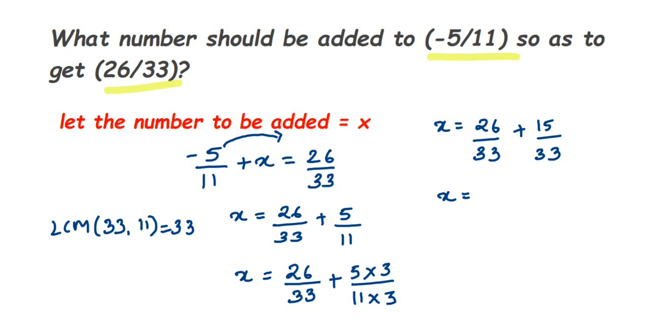So 26 + 15 over 33. When you add it, you will get here 41. So 41/33 is your answer. So the number to be added here is 41 upon 33.